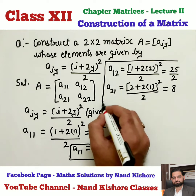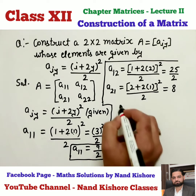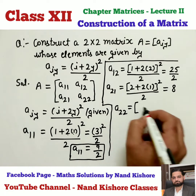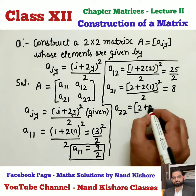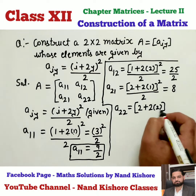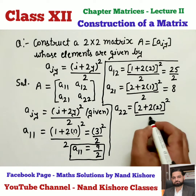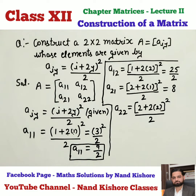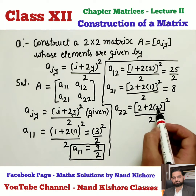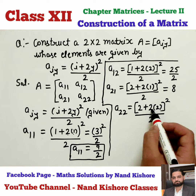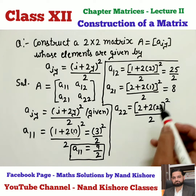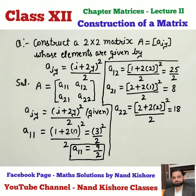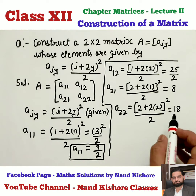Please do the calculation yourself. Then A22: let us try (2 + 2×2)² / 2. A22 means I and J both are 2. 2 twos are 4, 4 plus 2 is 6, 6² is 36, 36 by 2 is 18. So value of A22 will come out to be 18.